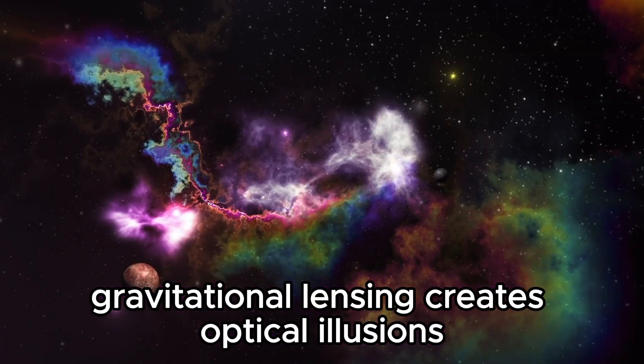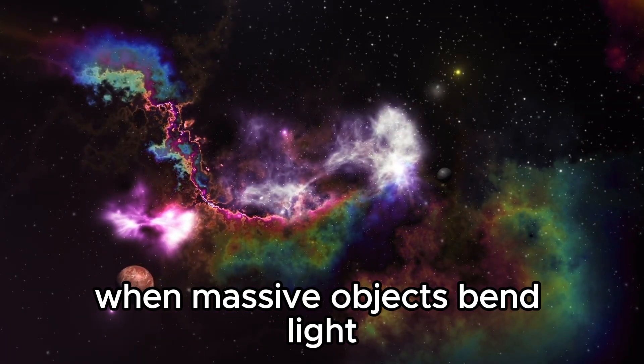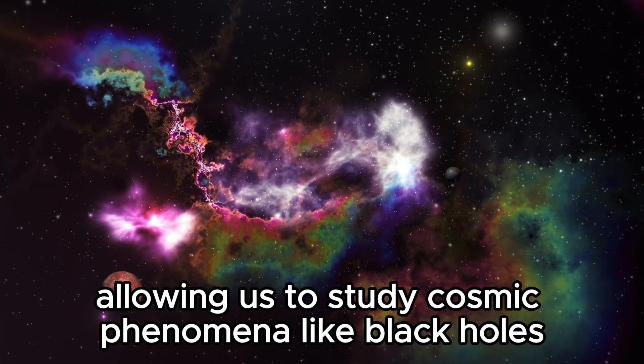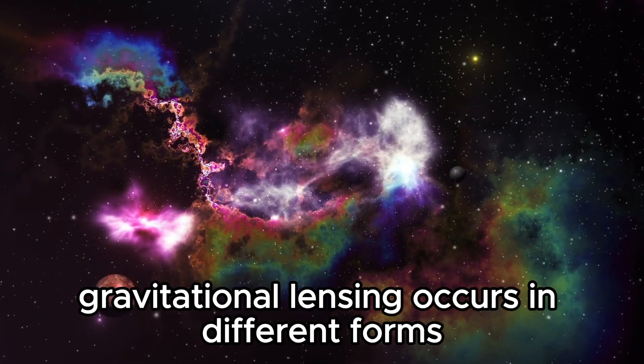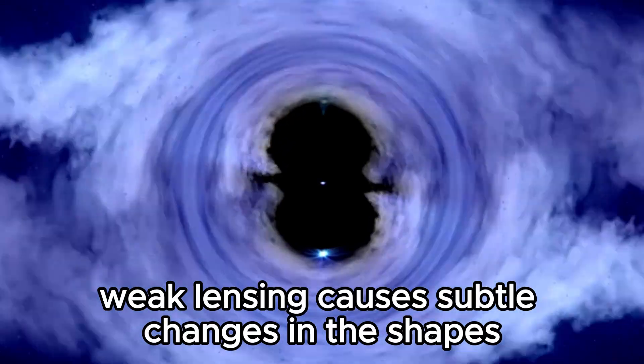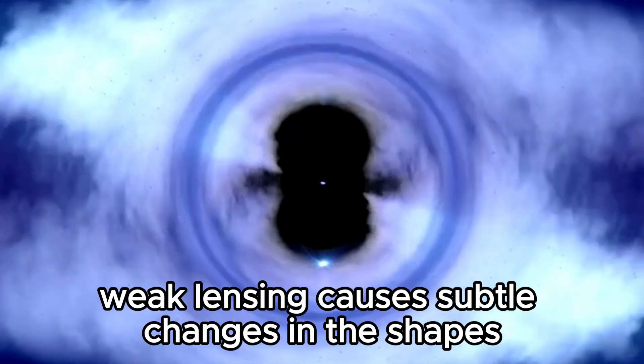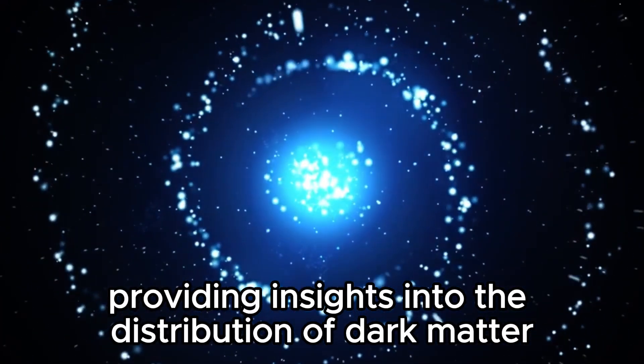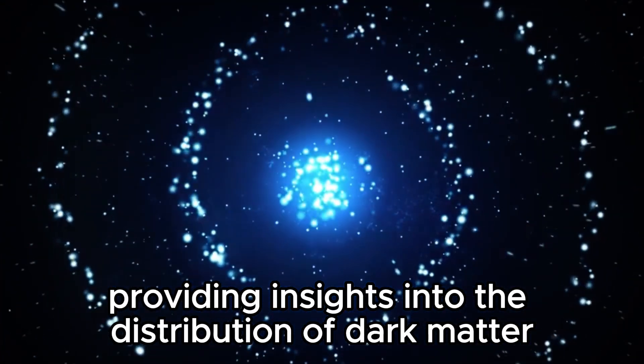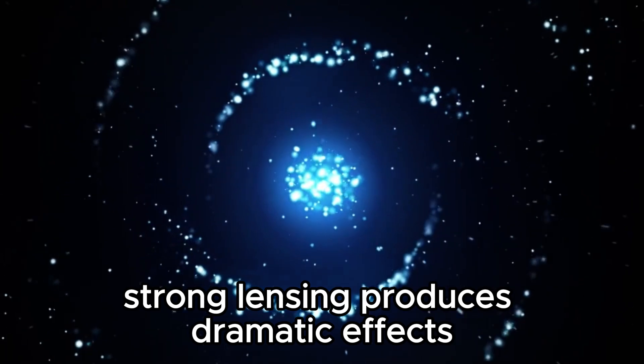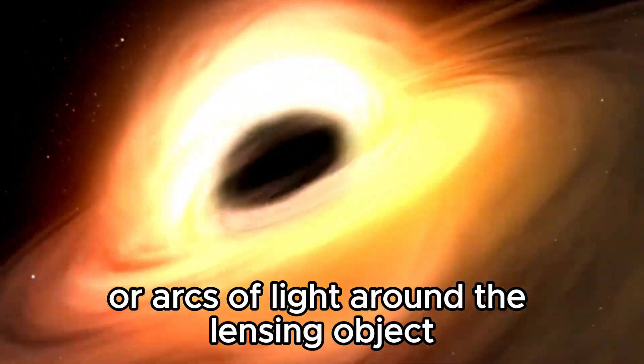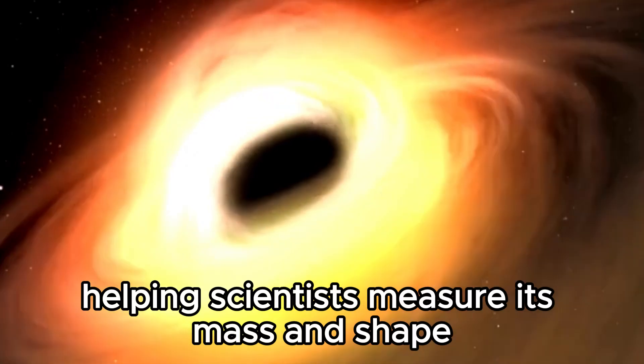Gravitational lensing creates optical illusions when massive objects bend light, allowing us to study cosmic phenomena like black holes. Gravitational lensing occurs in different forms. Weak lensing causes subtle changes in the shapes and positions of distant galaxies, providing insights into the distribution of dark matter. Strong lensing produces dramatic effects like multiple images or arcs of light around the lensing object, helping scientists measure its mass and shape.